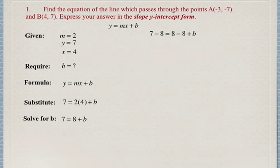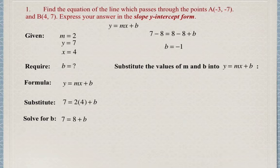So we subtract 8 from both sides and we find that b equals negative 1. We substitute the values we found into the equation y equals mx plus b, so that means that our equation is y equals 2x minus 1.